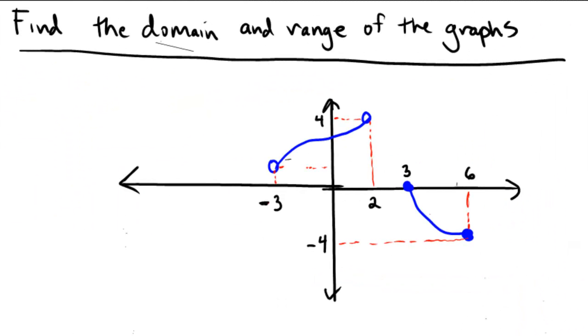Domain and range. This problem has us take this graph and try to figure out the domain and the range. Remember the domain is the set of allowable x values and range is the set of possible y values. So you can think of domain and range as being associated with the x's and the y's.